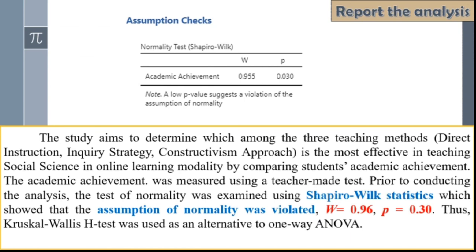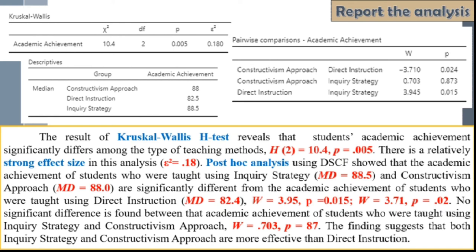The result of the Kruskal-Wallis H-Test reveals that students' academic achievement significantly differs among the types of teaching methods. There is a relatively strong effect size in this analysis, represented by the given value of 0.18. Post-hoc analysis using DSCF showed that the academic achievement of students taught using inquiry strategy and constructivism approach are significantly different from those taught using direct instruction. No significant difference was found between the academic achievement of students taught using inquiry strategy and constructivism approach. The findings suggest that both inquiry strategy and constructivism approach are more effective than direct instruction.